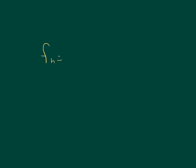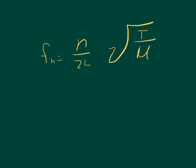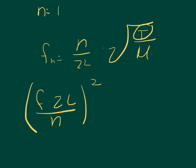Part C asks what tension is required to achieve this frequency. We use the tension equation: F_N equals N over 2L times the square root of tension over linear density. For the fundamental frequency, N equals 1. We rearrange to solve for tension: tension equals the quantity (frequency times 2L over N) squared, multiplied by the linear density.